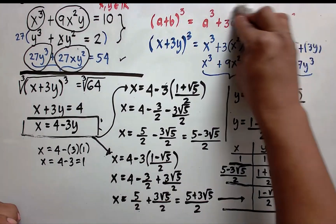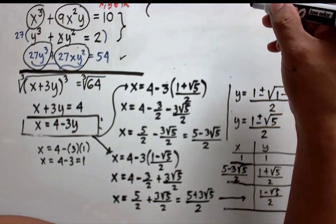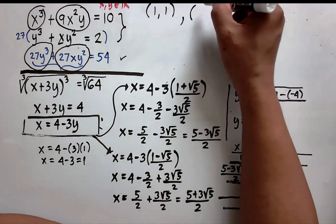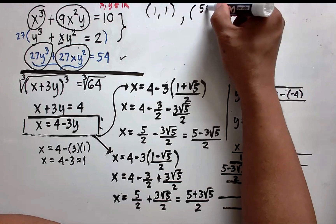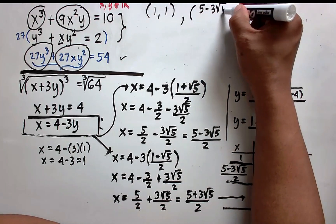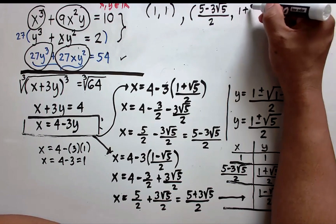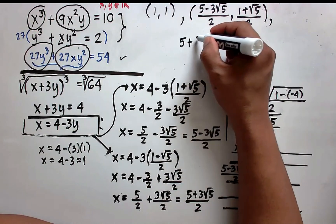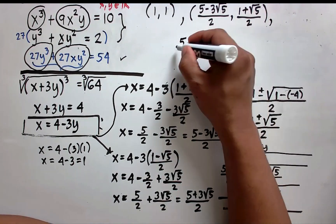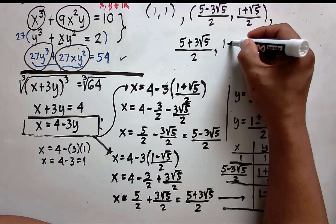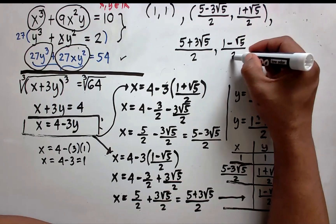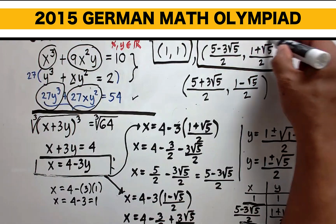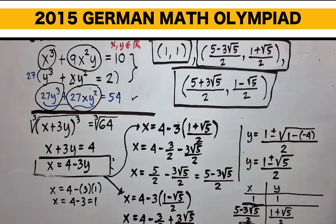To summarize, we have three ordered pairs as solutions: (x, y) = (1, 1); (x, y) = ((5 minus 3 square root of 5) over 2, (1 plus square root of 5) over 2); and (x, y) = ((5 plus 3 square root of 5) over 2, (1 minus square root of 5) over 2). These are the solutions to this system of equations. Thank you very much, and we hope to see you again in our next video.